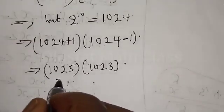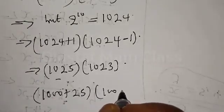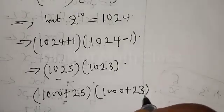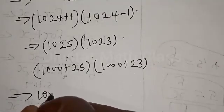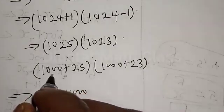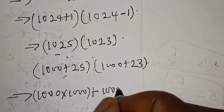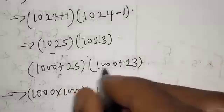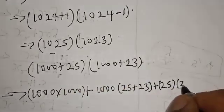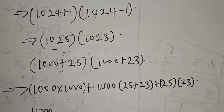Now this can be expressed as we have 1000 plus 25, into 1000 plus 23. Opening the bracket: 1000 multiplied by 1000, plus 1000 into 25 plus 23, plus 25 into 23. So 1000 times 1000 is 1,000,000, plus 1000 into 48, which is 48,000, plus 575.